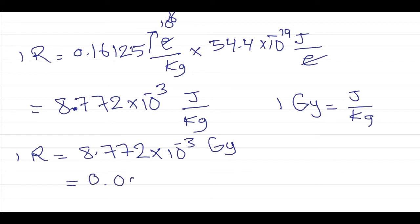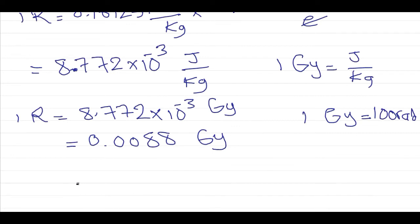Which equals 0.0088 Gray, or approximately 0.0088 Gray. Also, one Gray equals 100 Rad, so one Röntgen equals 0.88 Rad, using the old units.